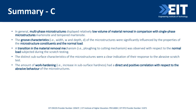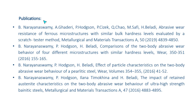In summary: multi-phase microstructures — bainite and pearlite — had lower volume of material removal and better abrasion resistance, particularly at lower loads; at higher loads their resistance decreases as more stress is applied than the material can sustain. Work hardening was critical across all microstructures — when work hardening occurs, wear resistance improves. Four publications resulted from this study, and ongoing research is continuing on bainitic steels.